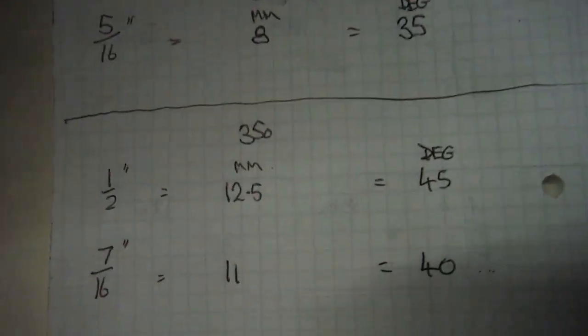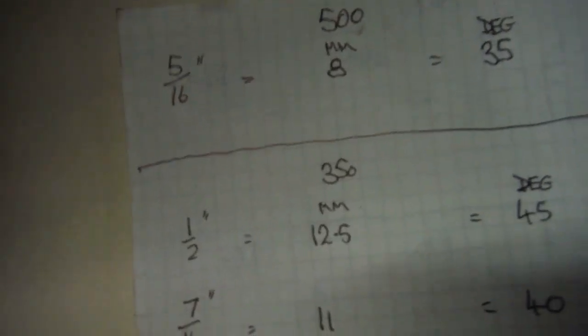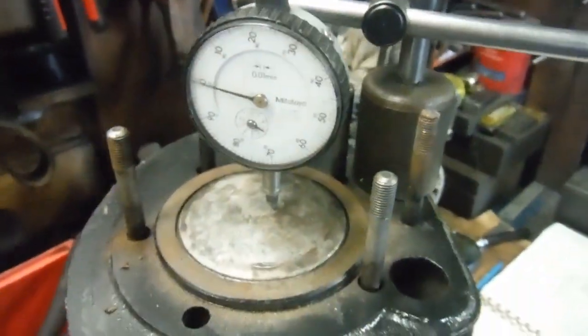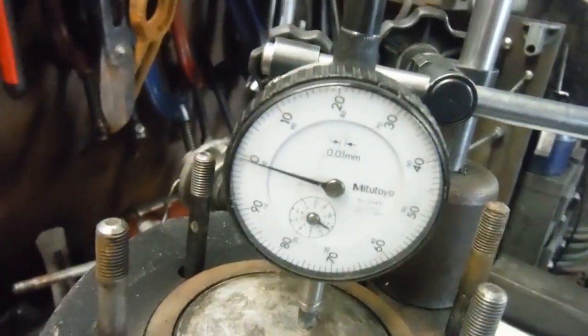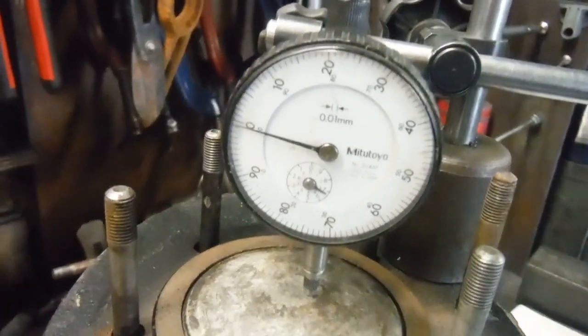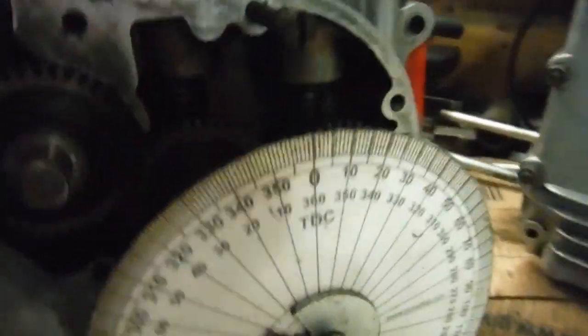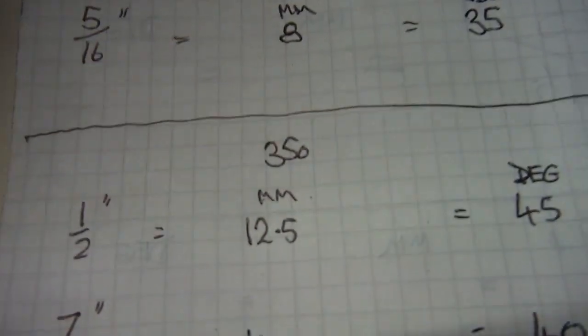What I've done on this piece of paper here is I've written the figures down and I've converted them to millimeters first of all, so that I could set up this dial gauge, which one revolution of the clock face is equal to one millimeter. I can measure back the engine up from top dead center where it's at now.